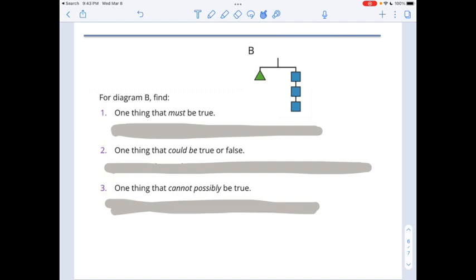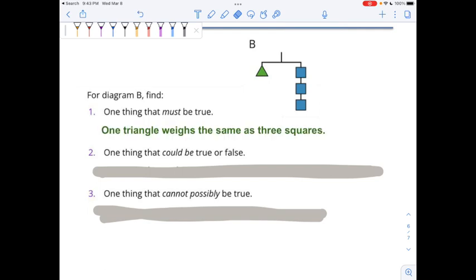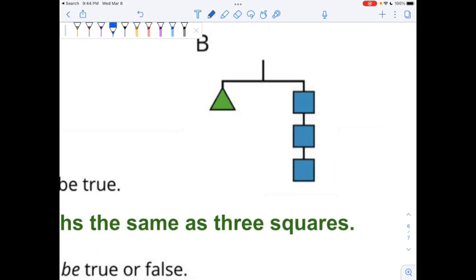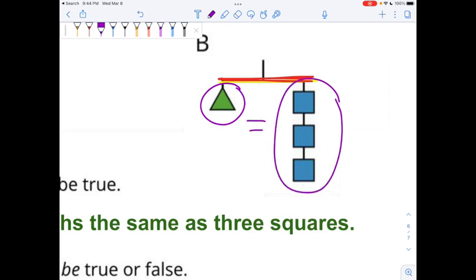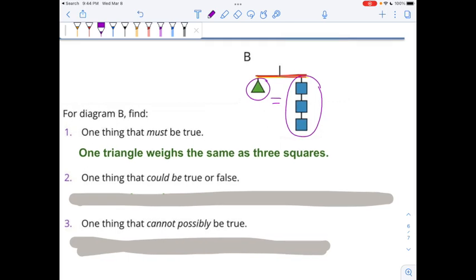All right. Did you write down answers for 1, 2, and 3? You might have the same thing as me. Or you might have a slightly different answer. That's fine. Let's go through and talk about this. One thing that must be true. I wrote one triangle weighs the same as three squares. Because this line of the hanger is straight across, that means everything on the left side is equal to all of the right side. So, one triangle weighs the same as three squares. I don't know what they weigh, but I know that together they weigh the same.